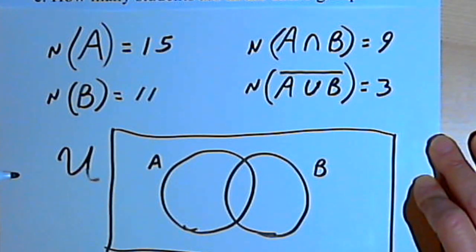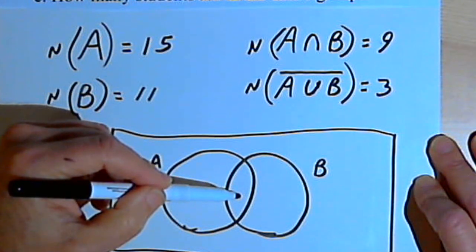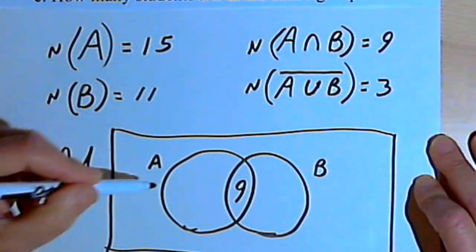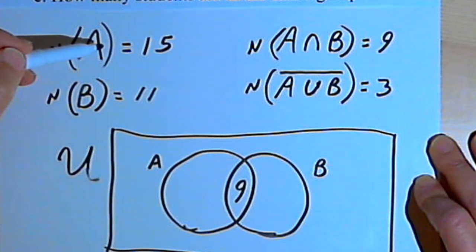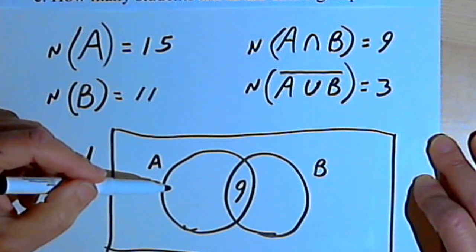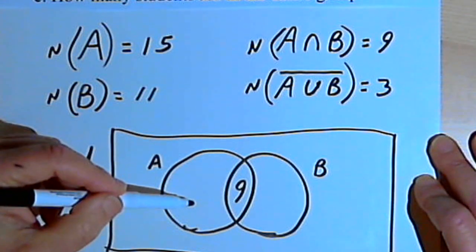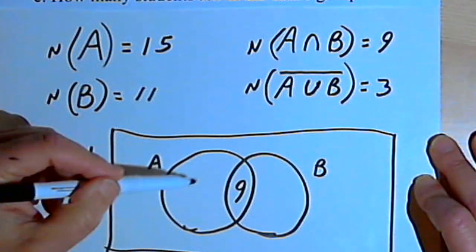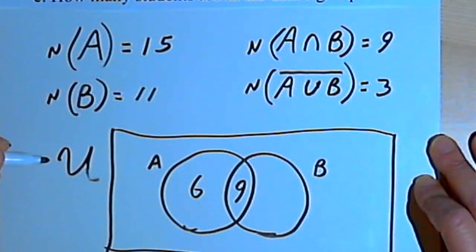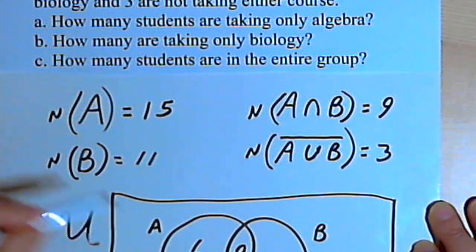I know that overlapping area, the intersection of A and B, contains 9 students. I also know that there's a total of 15 students who are in set A, who are taking algebra. But 9 of those students are in the overlapping area. So if I want the part that's not in that area, I'll just subtract 9 from 15. 9 from 15 will give me 6. And now I've answered the first question. How many students are taking only algebra? Well, that'll be 6.